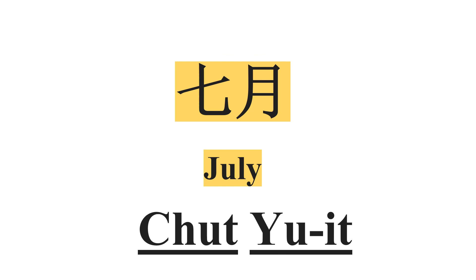Next we have July — 七月. 七 means seven — 七月.